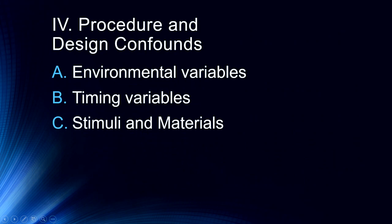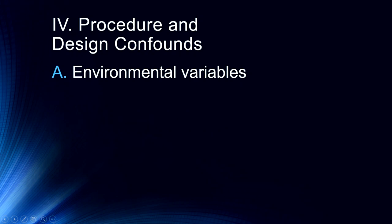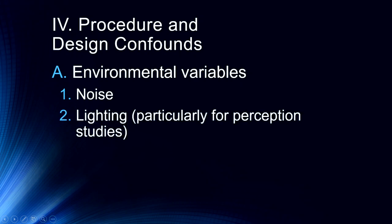Finally, we want to talk about some procedure and design confounds. Environmental variables are the first. These are things like unexpected noise, particularly if we are running a number of different conditions. If one day there's construction in the building with loud noise going on, we want to take note of that. Accurate record-keeping is one of the most important things — we have to record anything unusual that might happen during an experimental session. Lighting is also important, particularly if we're doing anything involving visual perception — the lighting must be consistent all the way through the experiment.